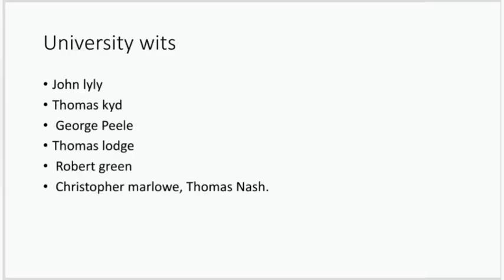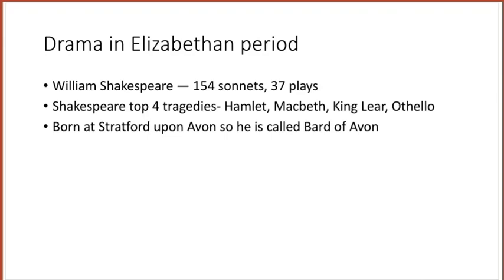There were a group of seven writers who came just before Shakespeare and influenced him, paving the way for a free and flexible drama. They are called the University Wits. The University Wits were Thomas Kyd, George Peele, Thomas Lodge, Robert Greene, Christopher Marlowe, and Thomas Nash.